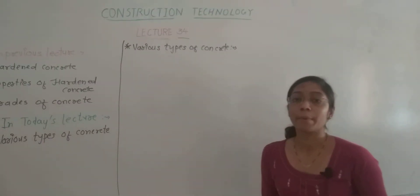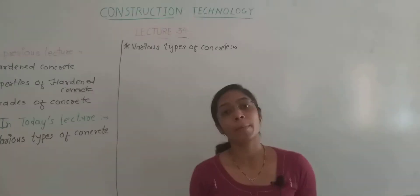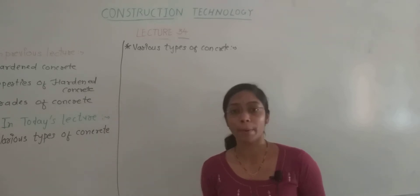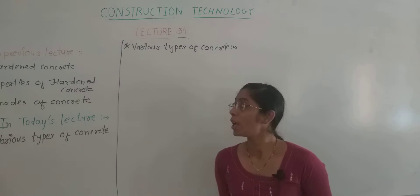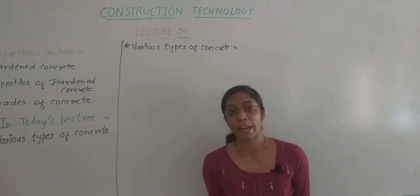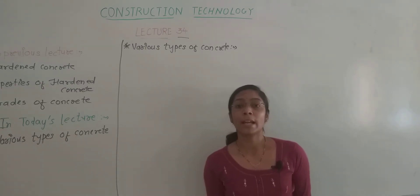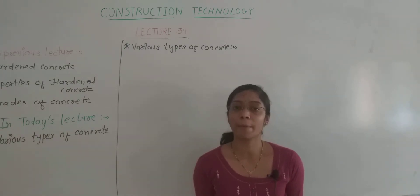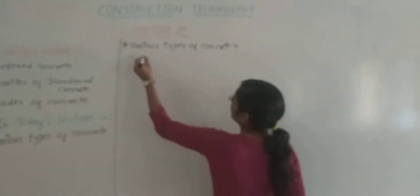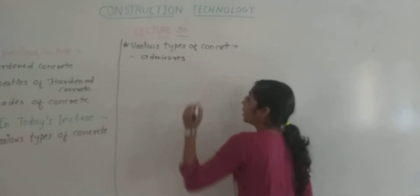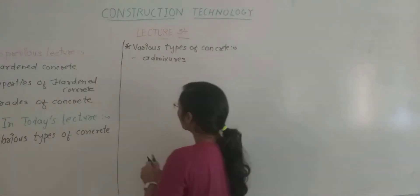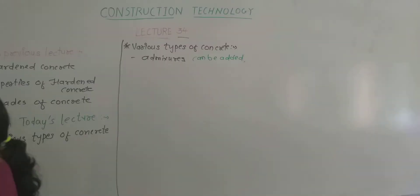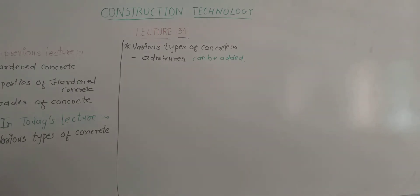To produce different types of concrete, we need to add admixtures into the mix. Admixtures can be added to achieve specific properties. Now let's see what are the different kinds of special concrete. The first type is light weight concrete.